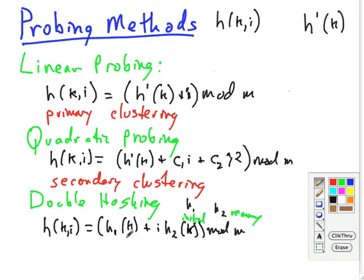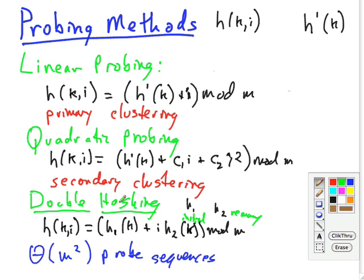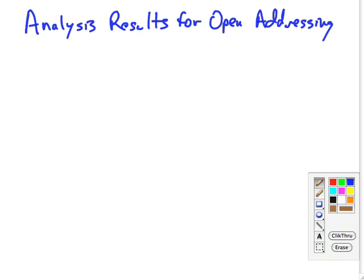There's two approaches to doing this. One is to say m, the table size, is the power of 2 and make h2 always produce an odd number. The other is to let m be a prime number and have h2 always be between 1 and m. This approach will give theta of m squared different probe sequences. Because every possible combination of h1 of k and h2 of k gives a different probe sequence. So it's an improvement over linear or quadratic hashing. So this is a good one to use if you're going to do it this way. Okay, you can find examples of double hashing in my web notes and also in the textbook.